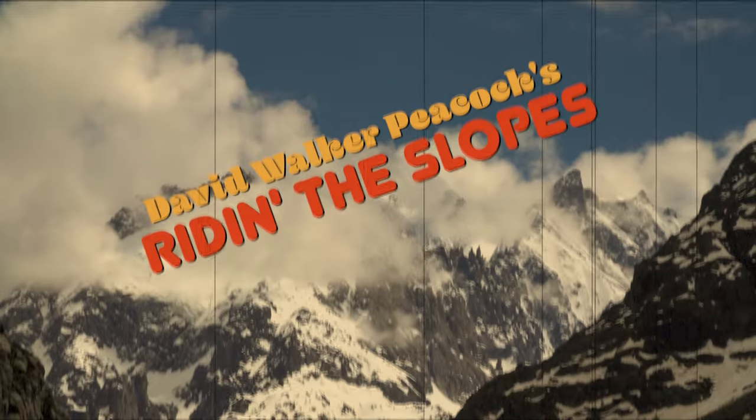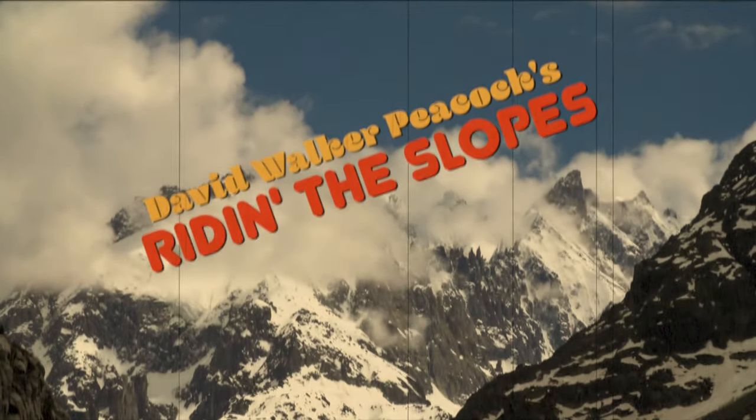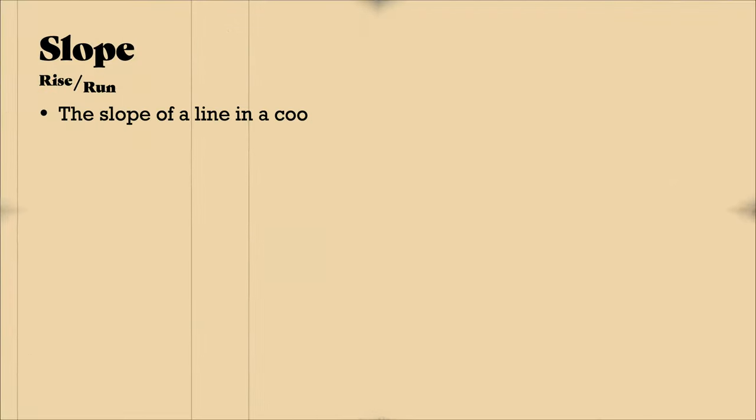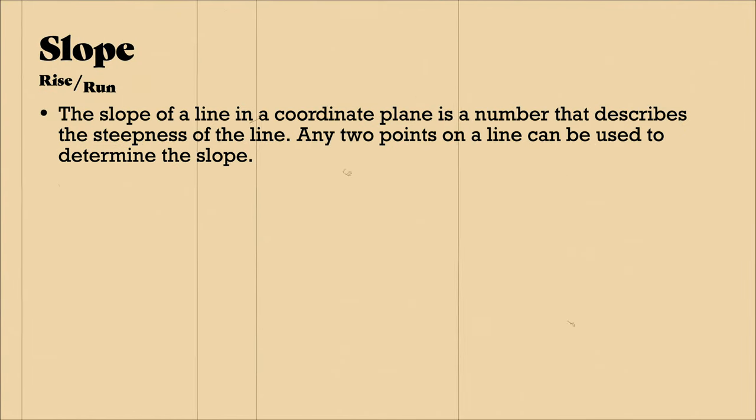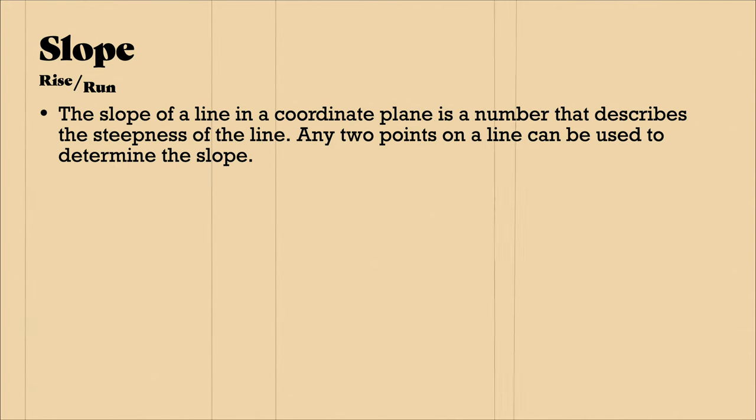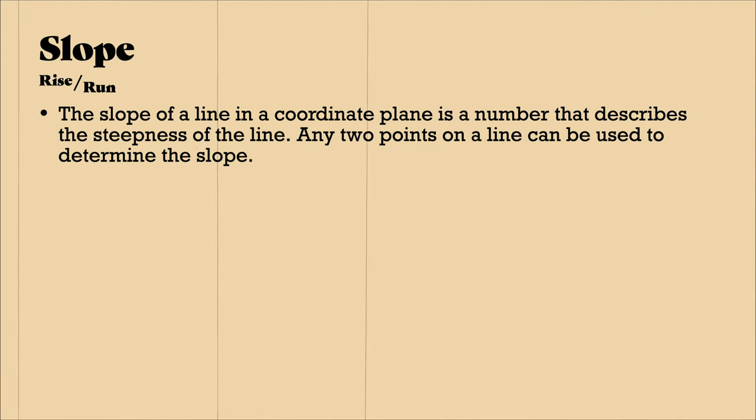Because this is geometry. So the slope of the line in a coordinate plane is a number that describes the steepness of the line. Any two points in a line can be used to determine the slope.